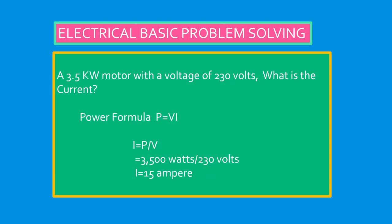This is the application of the formula that we discussed previously. Example: a 3.5 kilowatt motor with a voltage of 230 volts. What is the current?